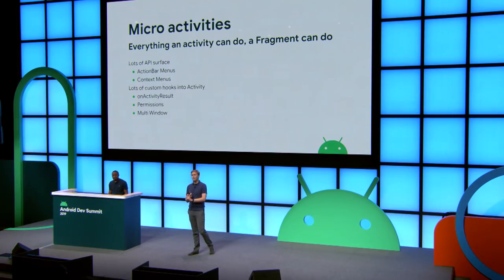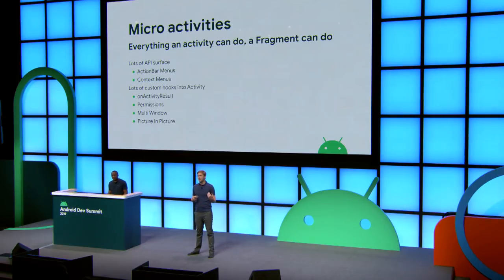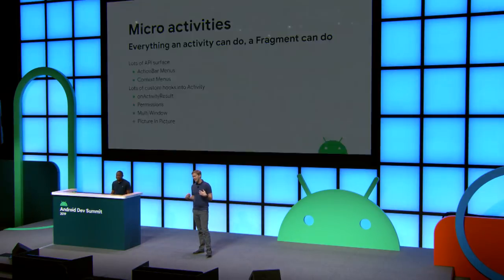We also got a lot of custom hooks, so all the things normally sent to your Activity are now also sent to your Fragment — things like onActivityResult, runtime permissions when Android M came out, onMultiWindowModeChanged, and onPictureInPictureModeChanged. These were all things we got for free being micro-activities. But when you think about it, a lot of these things aren't specific to fragments — it would be nice if anything could get these callbacks. So we've gone through an existential crisis moving away from the idea that just because an Activity can do it, a Fragment can do it.